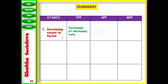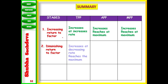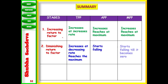In increasing returns, TP increases at an increasing rate, MP increases and reaches its maximum, and APP also increases and reaches its maximum. When we talk about diminishing returns to a factor, TP increases at a decreasing rate. AP is falling and MPP also falls and becomes zero. AP never becomes zero.